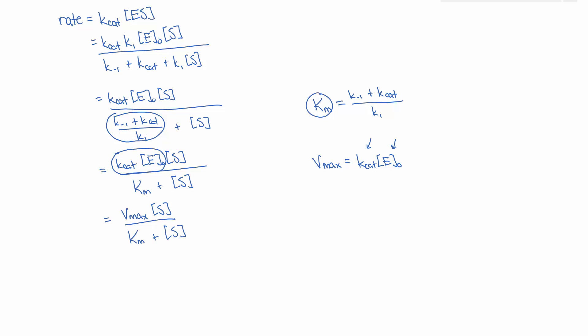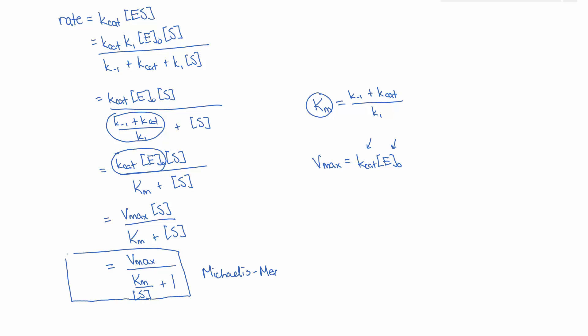Finally, I am going to divide the top and bottom of the fraction by the concentration of substrate. This is the Michaelis-Menten equation in its final form, how it is usually seen.